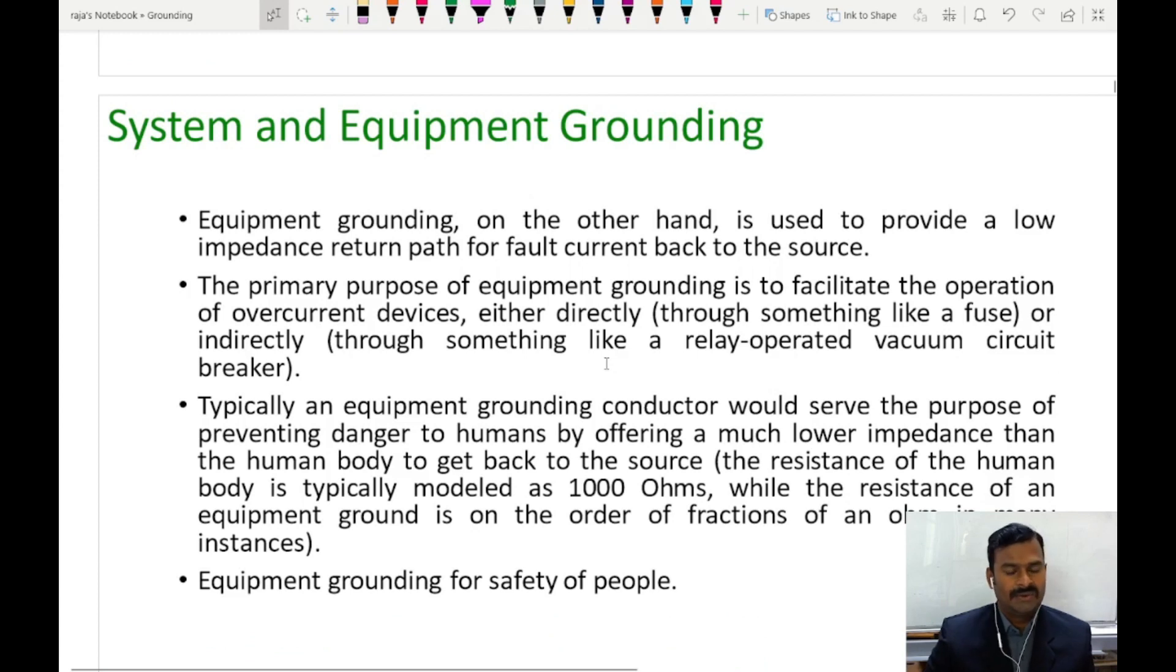Let us understand now what is equipment grounding. Equipment grounding is done to protect the human being from ground fault. For example, you say there is a connection between the line conductor and the machine body. The leakage current would be available in the machine cover and when the human comes in contact with that machine, it starts discharging through him.